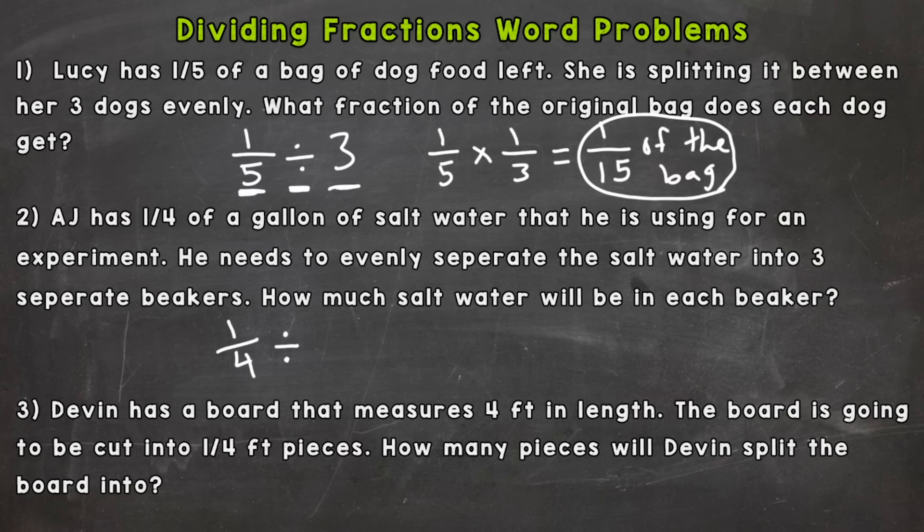So here 1/4 divided by 3. Keep, switch, and flip. Now we can go straight across. 1 times 1 is 1, 4 times 3 is 12. So each beaker is going to get 1/12 of a gallon.